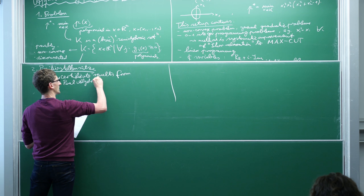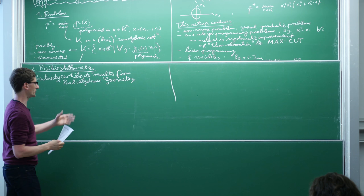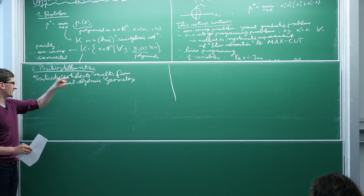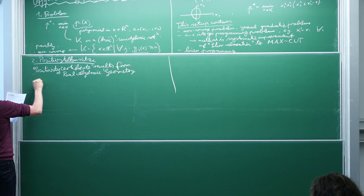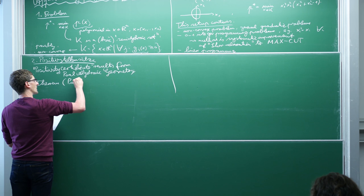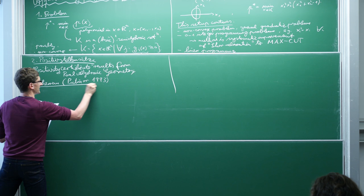These are positivity certificate results. This area of mathematics is called real algebraic geometry. Algebraic geometry means we are dealing with polynomials, and real algebraic geometry means the underlying field — the real numbers — is ordered, so we can use inequalities and not just equalities. The basic theorem on which today's results are based is a theorem by Putinar, who came up with this result in 1993. There were a few forerunners, but this is the best version.